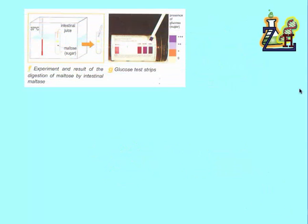The last experiment is done this time on maltose. We added to it some intestinal juice and then they made the glucose test. These are strips, just like the pH strips. They dip them inside a solution and they look at the color. Notice that we got a violet color, which means the presence of glucose.